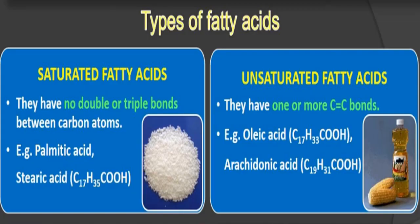There are two types of fatty acids: saturated fatty acids and unsaturated fatty acids. Saturated fatty acids have no double bond or triple bond between carbon atoms — examples are palmitic acid and stearic acid. Unsaturated fatty acids have one or more double bonds between carbons — examples are oleic acid and arachidonic acid.